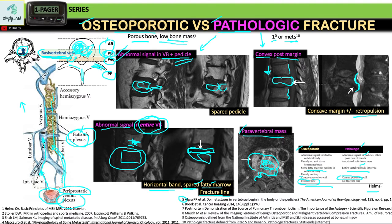Osteoporotic fractures are most likely solitary while pathologic fractures tend to be multiple. We have to look at all of the signs to make the diagnosis — you just don't pick one. To strengthen your diagnosis, you have to weigh how many signs favor osteoporotic and how many favor a pathologic fracture, and of course that's in addition to the clinical data.